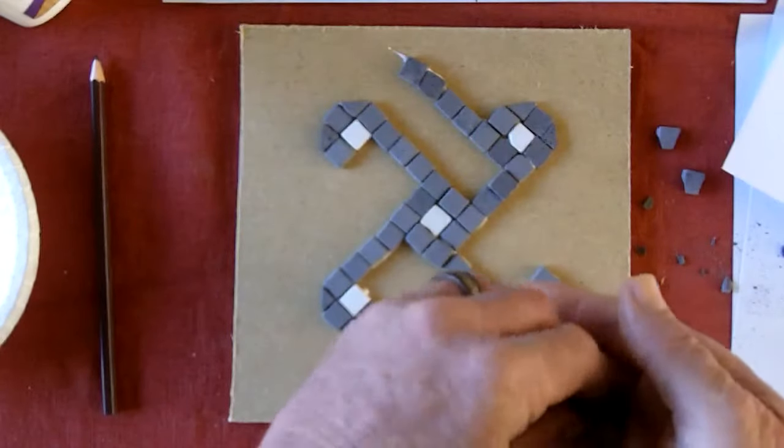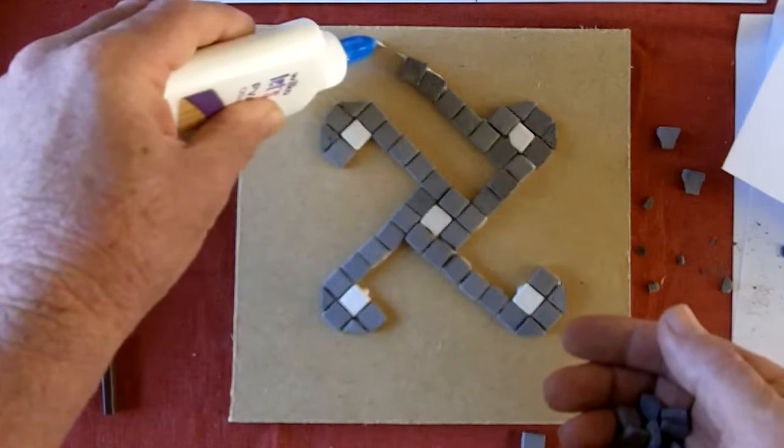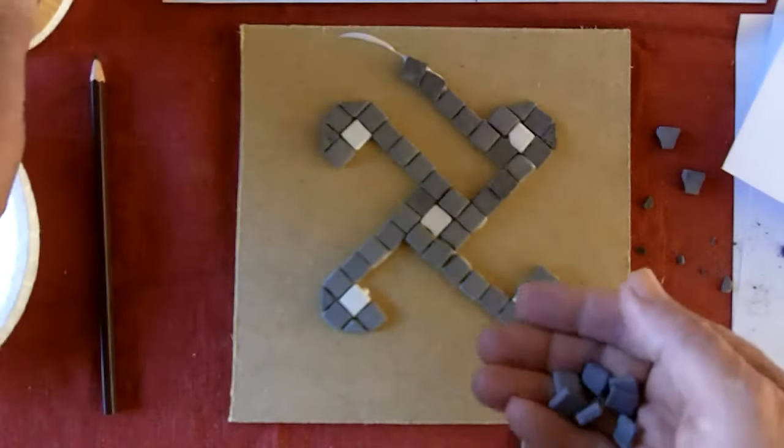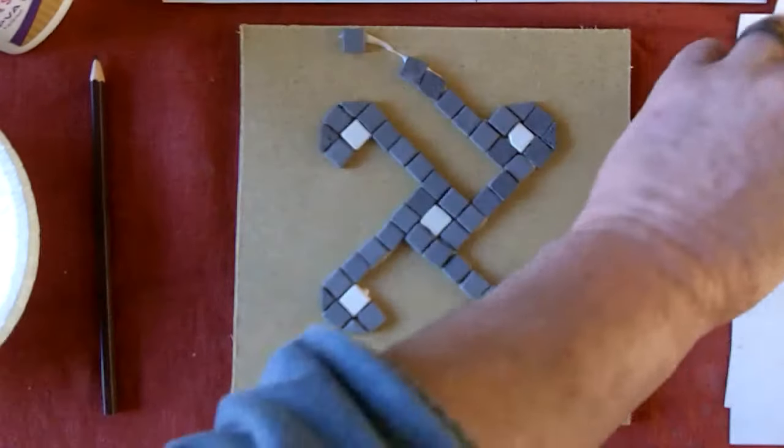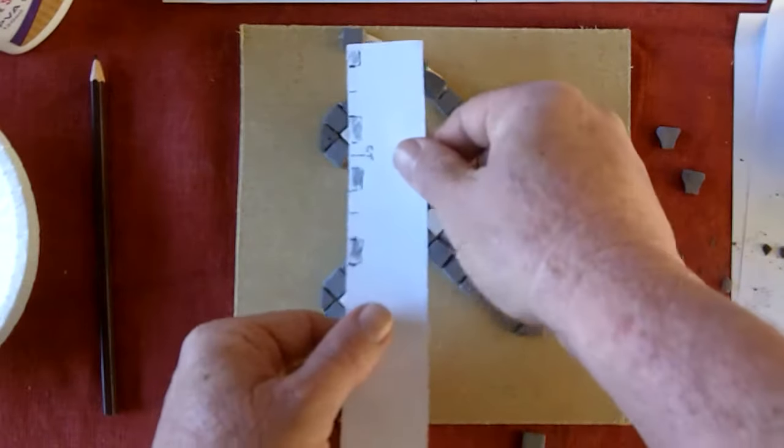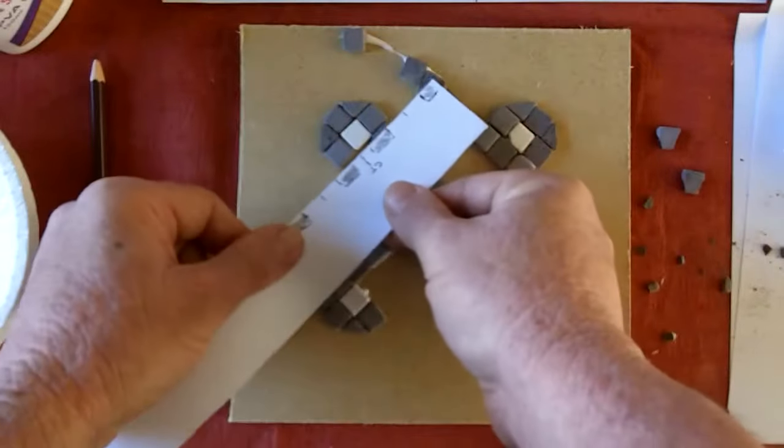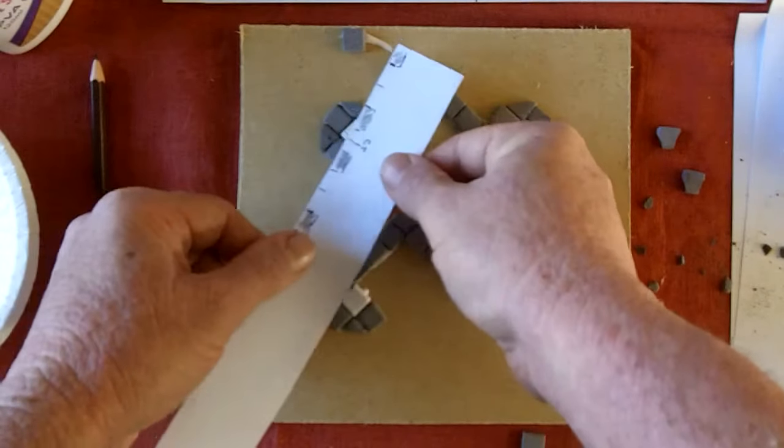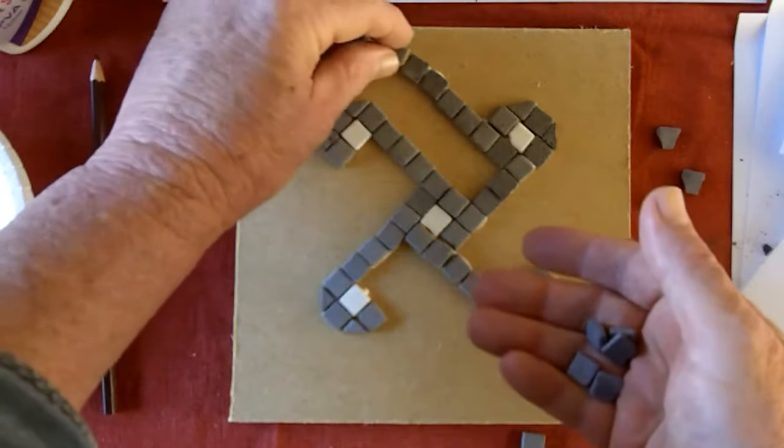And what it should come round to. So if we come round to about there. Two tesseri width. There is your staff. You can see that leaves two tesseri space, two tesseri gap. And you want that all the way round.